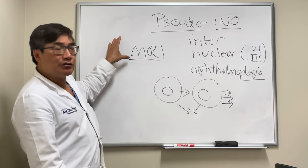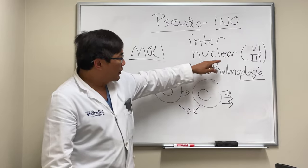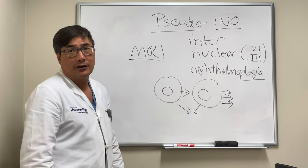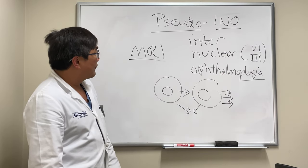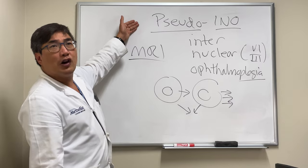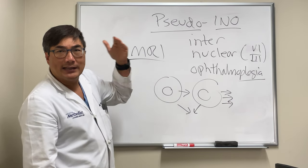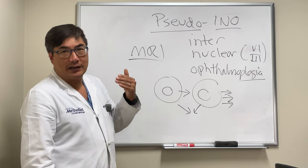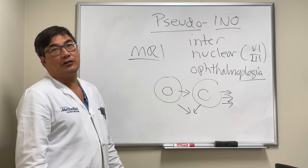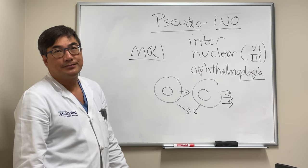If you can't tell the difference clinically, do an MRI. If the MRI shows no lesion in the medial longitudinal fasciculus between the pontine sixth and third nerve nuclei, think about pseudo-INO. At the top of the list is myasthenia, but it could always be the muscle. The most common cause of pseudo-INO is myasthenia gravis.